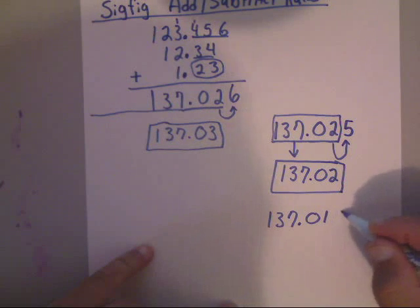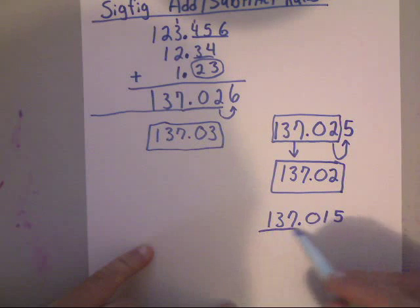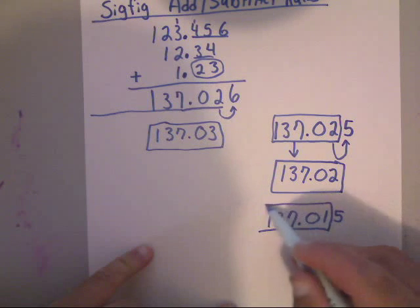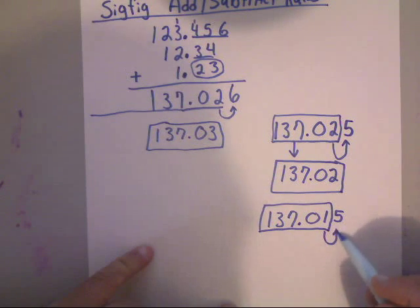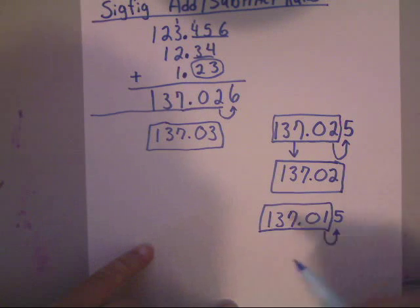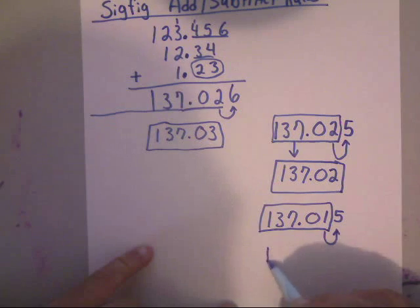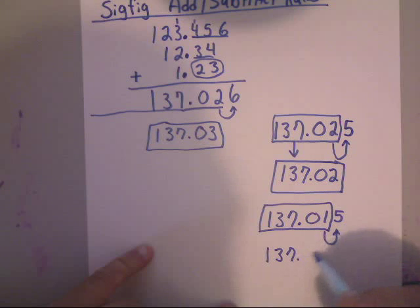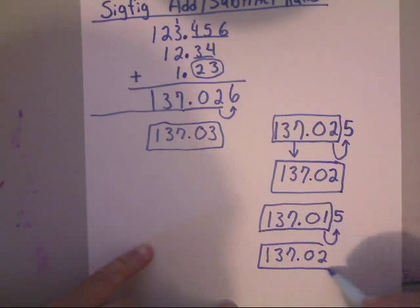Now if you would have had 137.01 and then the five right there, and you were going to try to keep just these numbers and you look to the right, that would cause that number to go up to the next even.